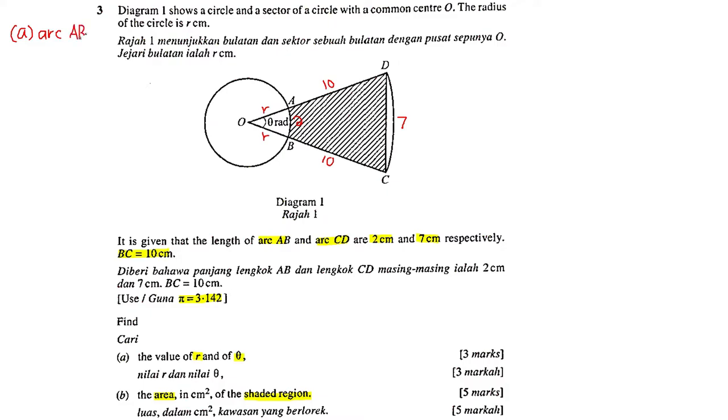Arc AB equals 2, so R theta equals 2. That is our first equation. Arc DC equals 7, so (R + 10)theta equals 7.